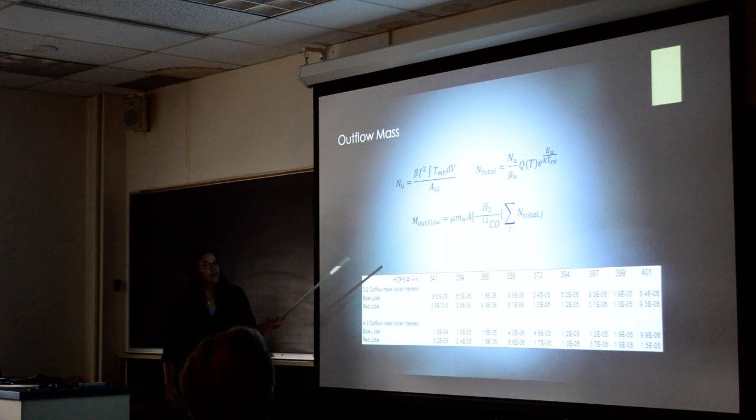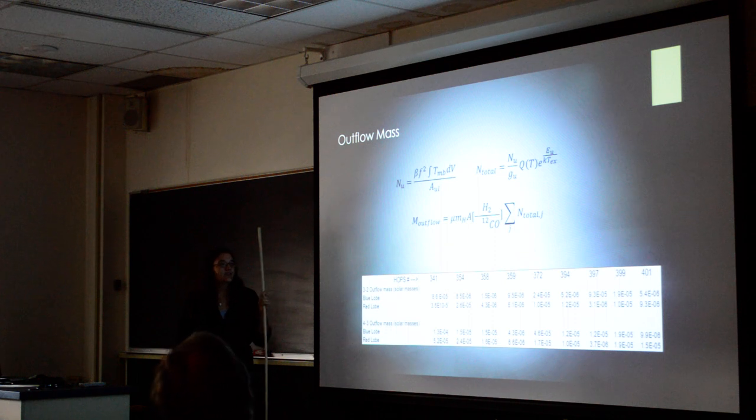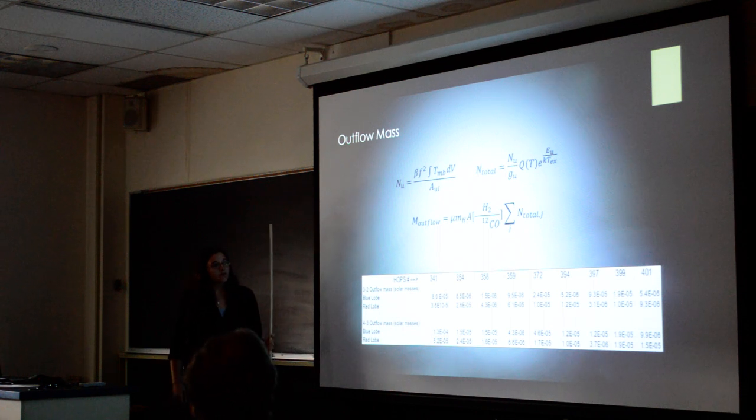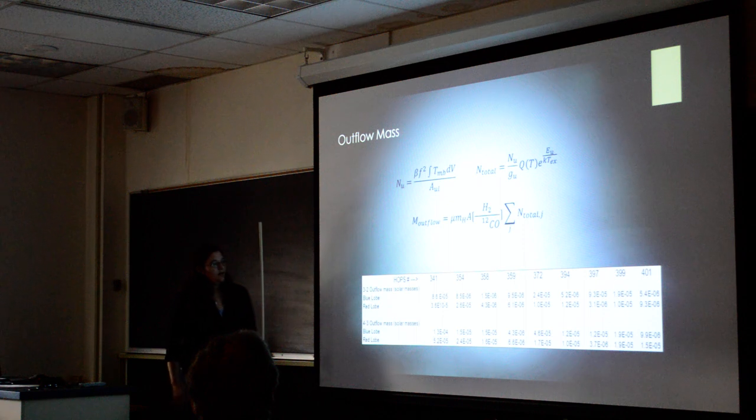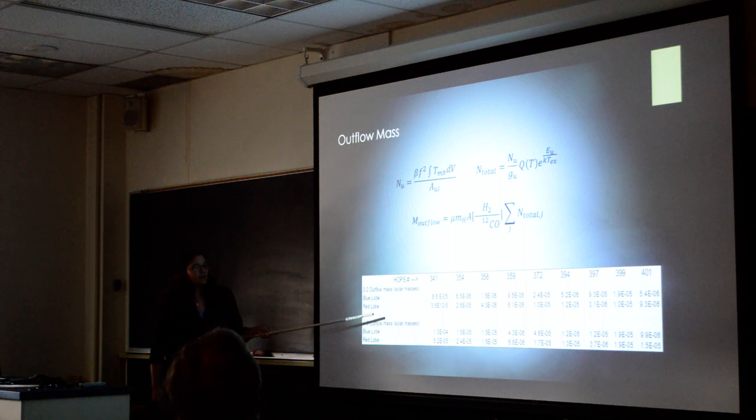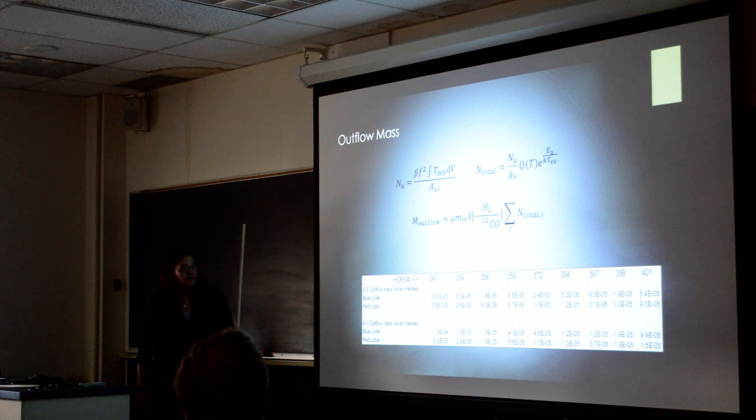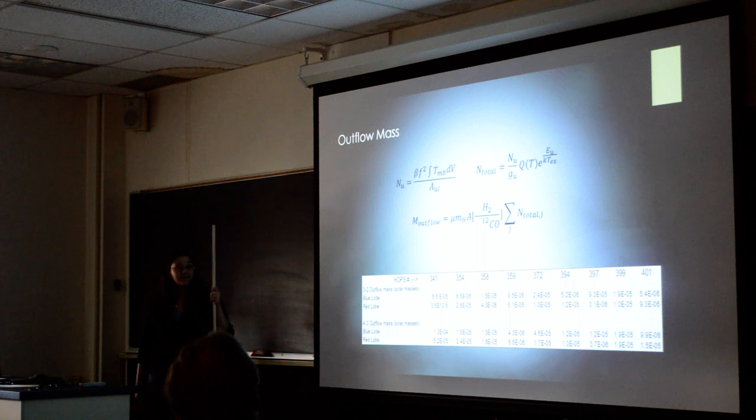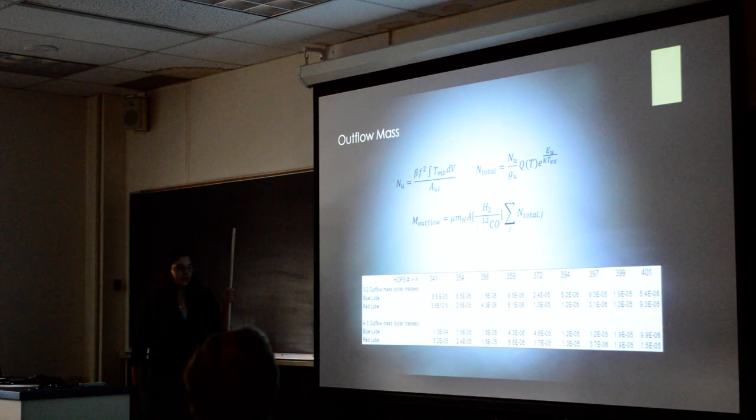And then you could finally calculate the mass of the outflow, which was mu, a constant, times the mass of hydrogen, times the area of a singular pixel over the total column density. And here is the raw data for each of the 10 sources. They were all around 10 to the negative 5 or 6 solar masses, which is pretty consistent considering how different each lobe would look.